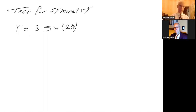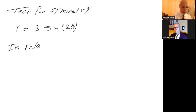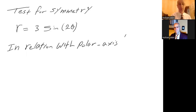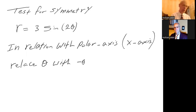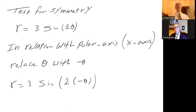Step one: I'm going to replace theta with negative theta. If the result is the same, then I know I have symmetry and can stop. In relation with the polar axis — you can think of this as similar to the x-axis — replacing theta with negative theta gives r equals 3 times sine of 2 times negative theta. Since sine is an odd function, this is the same as r equals minus 3 sine of 2 theta. That's not the same as the original, so I have to go to the next step.